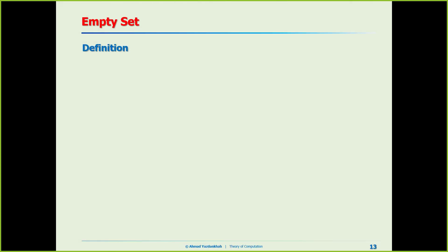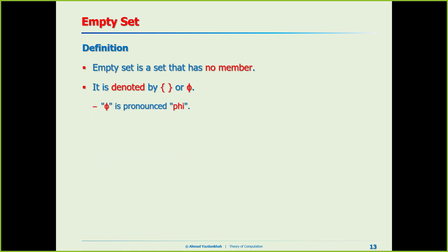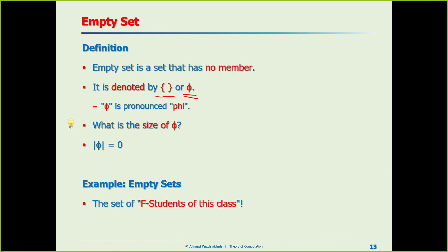The empty set is a set that does not have any member. We denote it with either two empty curly braces {} or phi (∅). The size of phi is 0. Examples include the set of F students in this class, or the set of the eighth day of a week — these are empty sets.